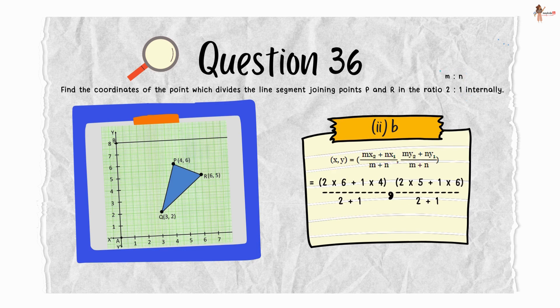Substituting the given values, we get 2 into 6 plus 1 into 4 upon 2 plus 1 is x coordinate, and 2 into 5 plus 1 into 6 upon 2 plus 1 would be y coordinate. Therefore, 16 by 3 and 16 by 3 are the x and y coordinates respectively.